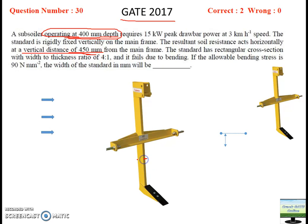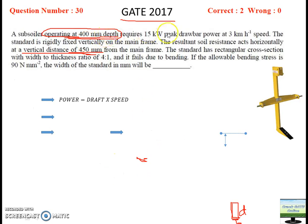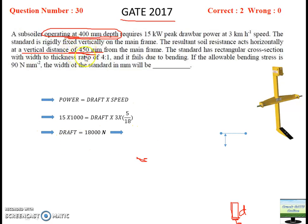As you can see, this will be your depth and this will be your width, giving you a cross section like this — where this is your thickness (which you can also denote by T) and this is your depth. Power has been given and speed has been given, so from there you can calculate the draft force. Now you know the draft. The bending moment is calculated by multiplying the depth by the force — since this force is acting at 450 mm depth, the moment equals 450 mm multiplied by the draft force.